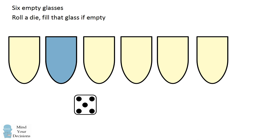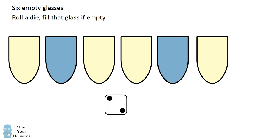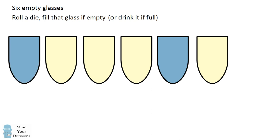If we roll another number, we fill that glass with liquid. If we roll a number for a glass that's already full, we're going to drink that glass so that it becomes empty. We continue playing by rolling the dice and filling up glasses or emptying them as necessary.